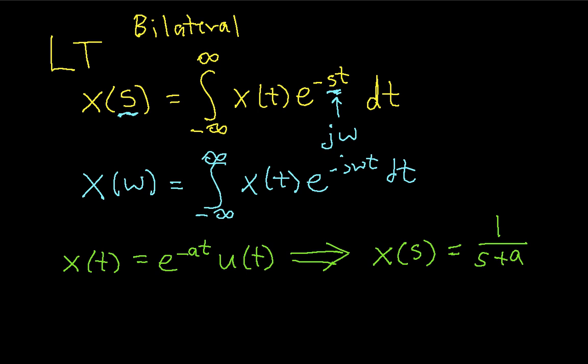Using this result that we've just looked at, we can say that x of omega is equal to 1 over j omega plus a. So there you have it, possibly your first Fourier transform and that was pretty easy, wasn't it?